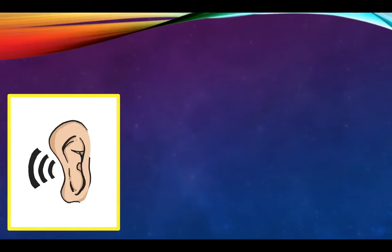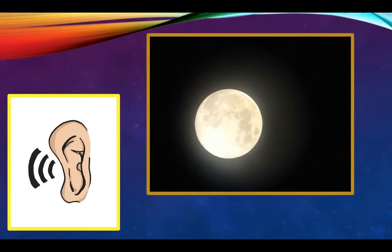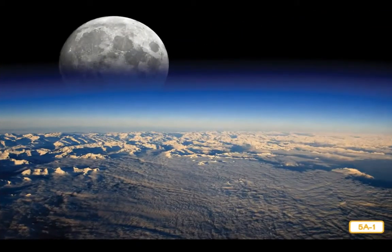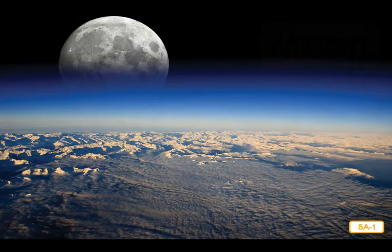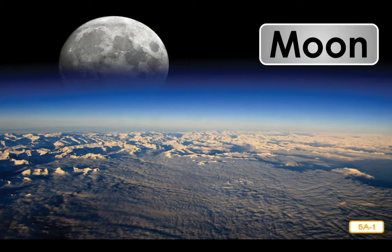Listen carefully. In today's read aloud, we are going to hear that the moon does not have its own light. Rather, the light you see when you look at the moon is actually light from the sun reflecting off the moon. Earth's closest celestial neighbor is the moon, which people have been looking at and wondering about for thousands of years, inventing all kinds of stories about it.